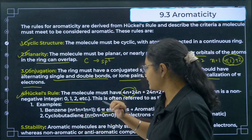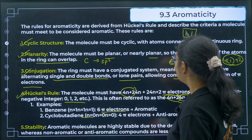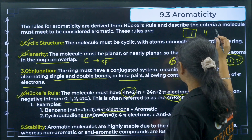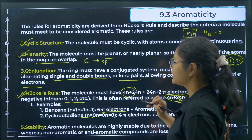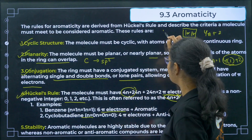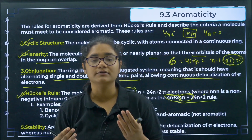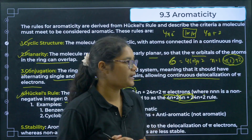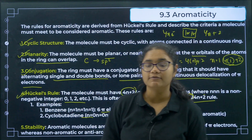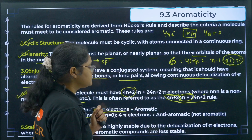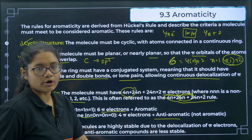For cyclobutadiene, the structure has 2 pi electrons in one double bond and 2 pi electrons in the other, giving 4 pi electrons total. Can we write 4 as 4n + 2? No. We can only write it in the form of 4n (with n = 1). So if a compound has 4n pi electrons, it is an anti-aromatic compound, not aromatic.